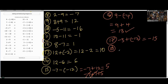Number 18: negative 8 plus negative 11. Same thing — negative 8, then you add negative 11. So how many negatives altogether? 19. Negative 19.